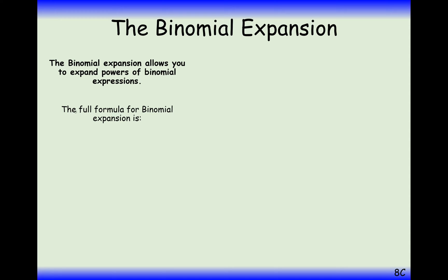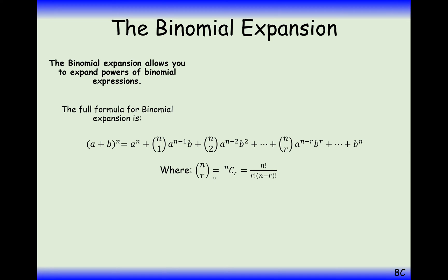The full formula for the binomial expansion is shown here. The notation n with a 1 over it is another way of writing n choose 1. Remember that the powers of a are going to be decreasing each term, and the powers on the b term are going to be increasing from 0. All binomial expansion terms effectively start at 0 — this is like n choose 0 with a b to the power of 0, which is invisible.